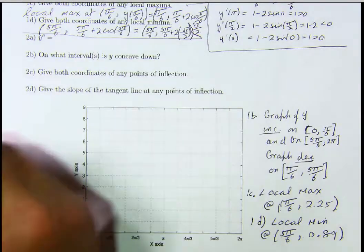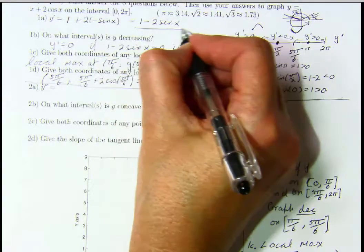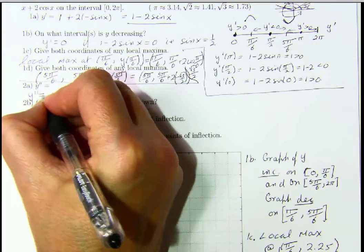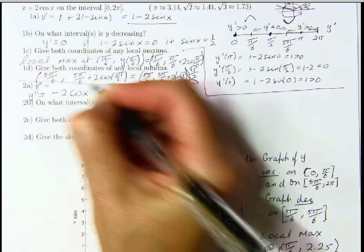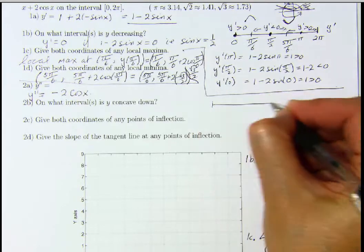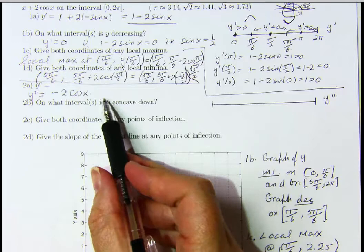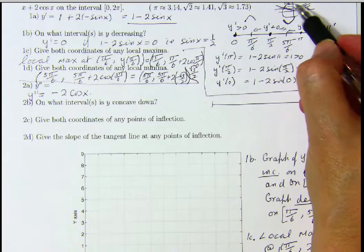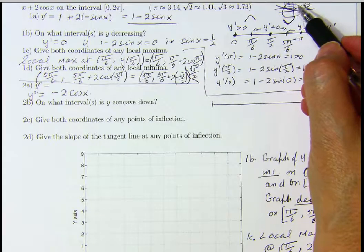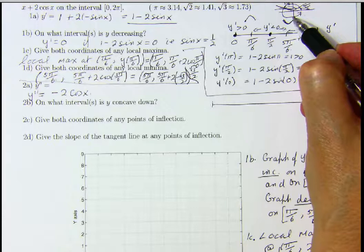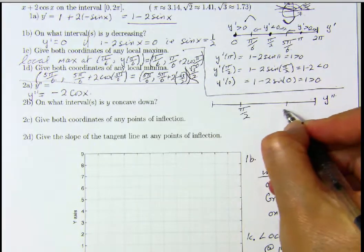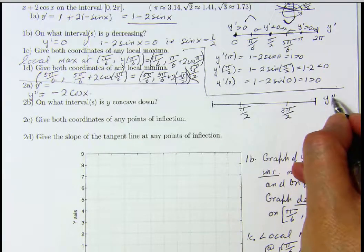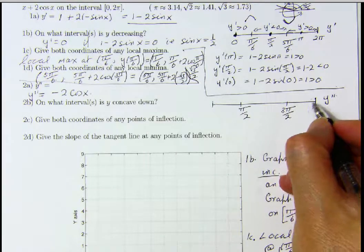Now y double prime will tell us about concavity. We have y prime is 1 minus 2 times sine x, and y double prime is going to be the derivative of that, which is minus 2 times the derivative of sine x, which is cosine of x. We'd like to analyze the sign of y double prime, and we can see it possibly changes sign when cosine of x equals 0. The points on the unit circle between 0 and 2π where cosine of x equals 0 are π/2 and 3π/2. These are the points where y double prime might switch sign, so we need to plug in a test point.